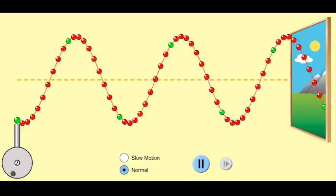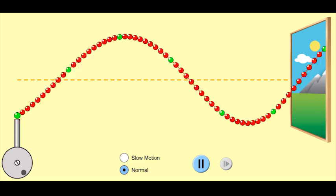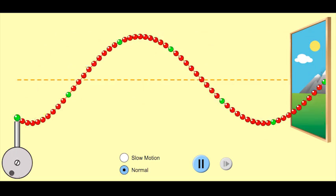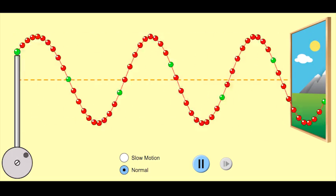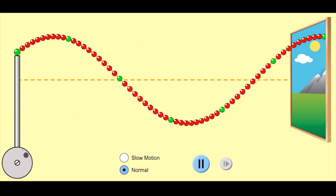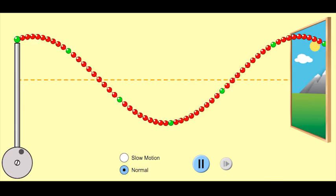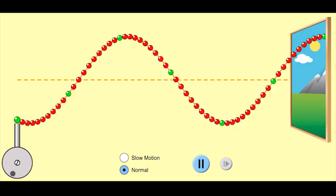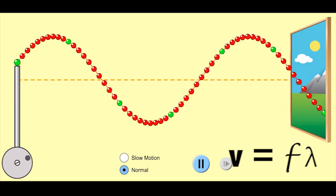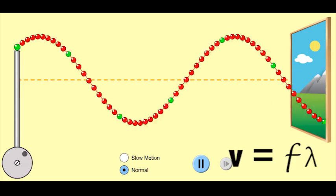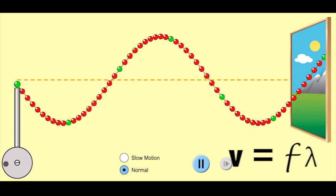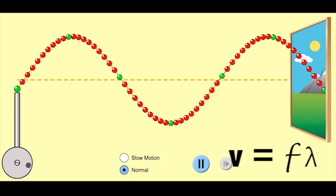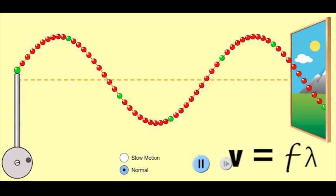But have you noticed something that doesn't change? That's right, the speed. The speed remains constant. Whether I increase the frequency or decrease the frequency, the rate at which the wave moves out through the window clearly remains the same. And that's because the product of the frequency and the wavelength equals the velocity of the wave. V equals F lambda. And that's often referred to as the wave equation, one of the most important formulas in the understanding of waves.